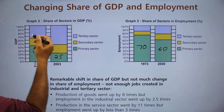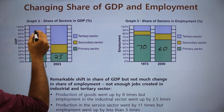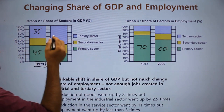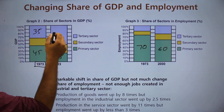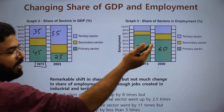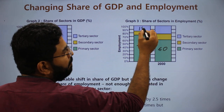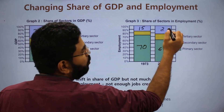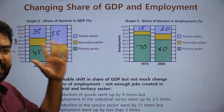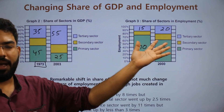On the other hand, looking at the tertiary sector, its share in GDP was close to 35%, which has increased to around 55%. However, employment in the tertiary sector was around 15%, which has increased to only around 20%. So even though the GDP share increased manifold, the employment increase has not been much.